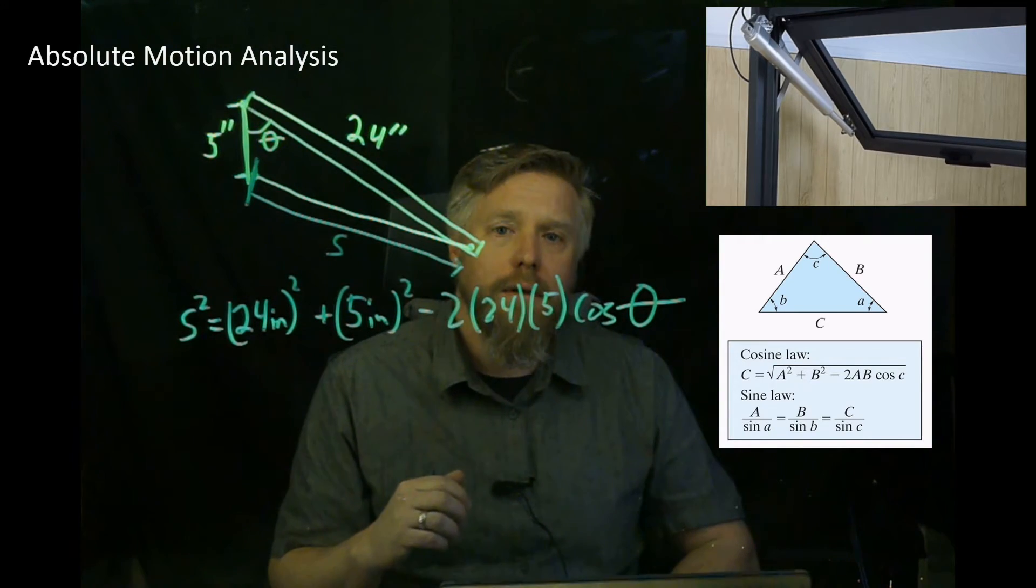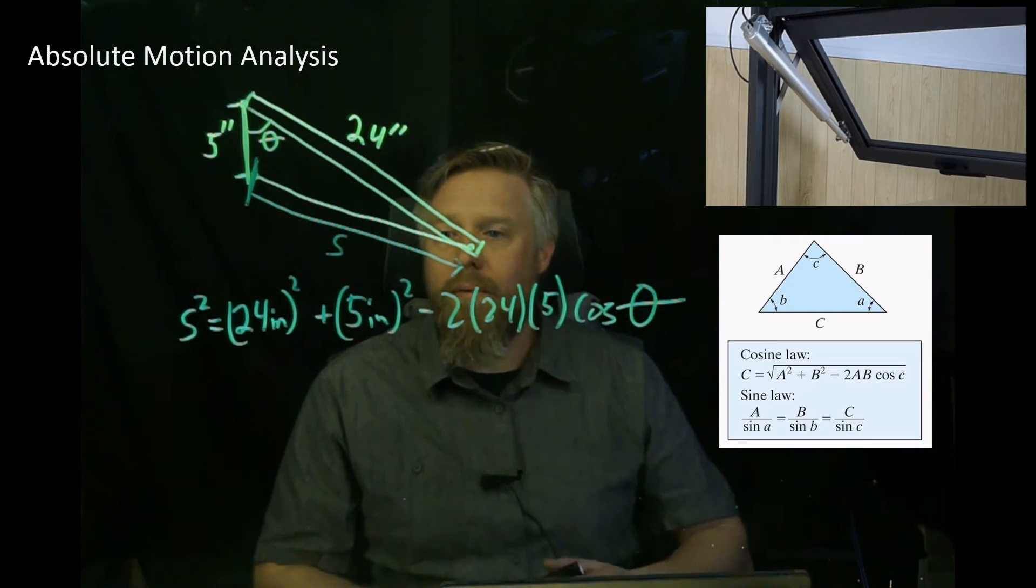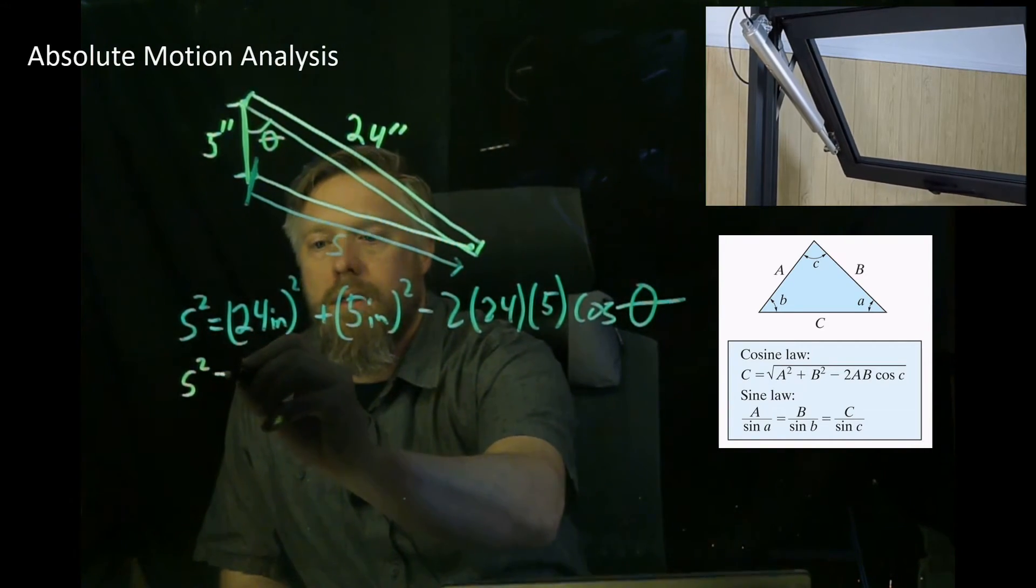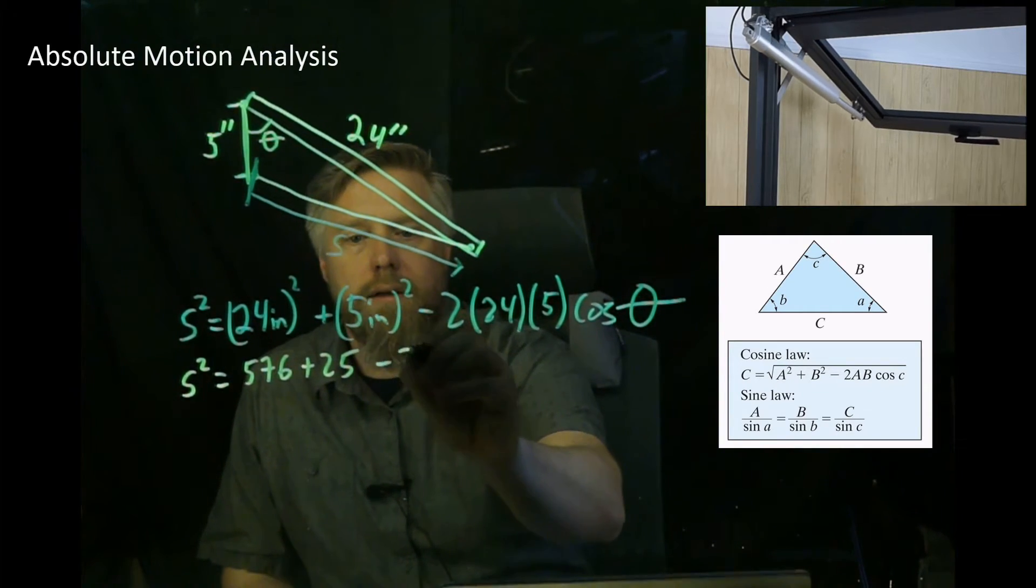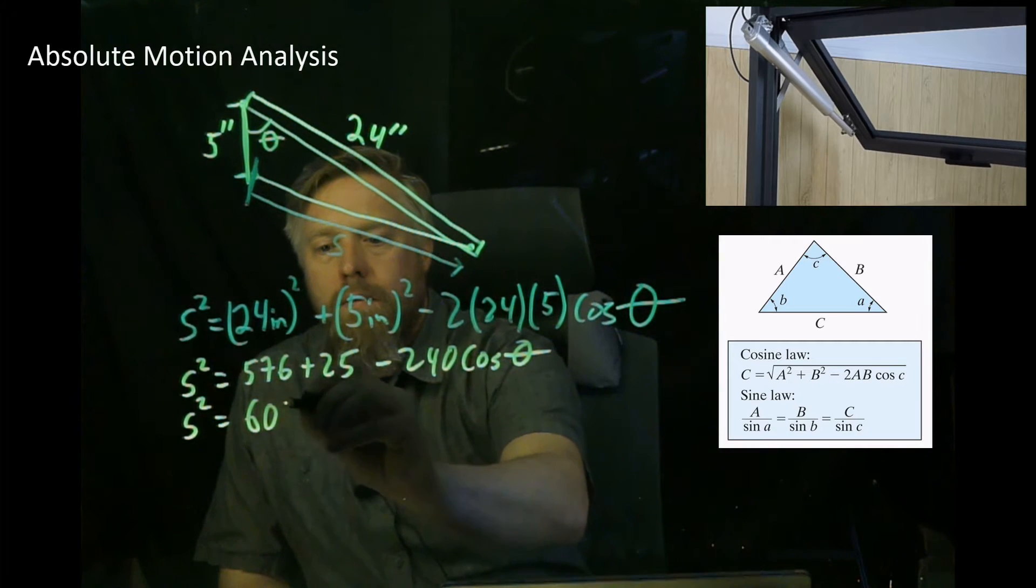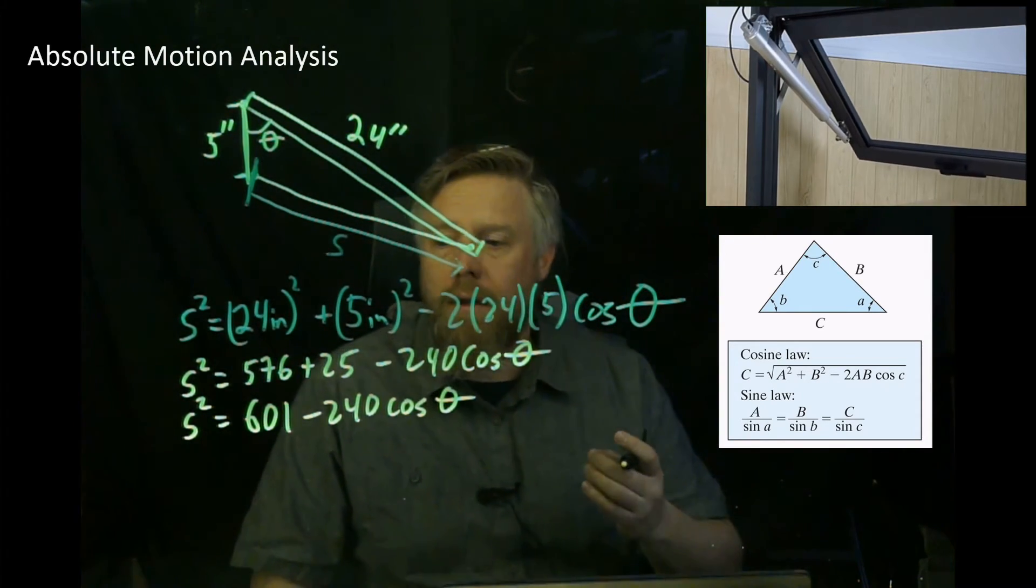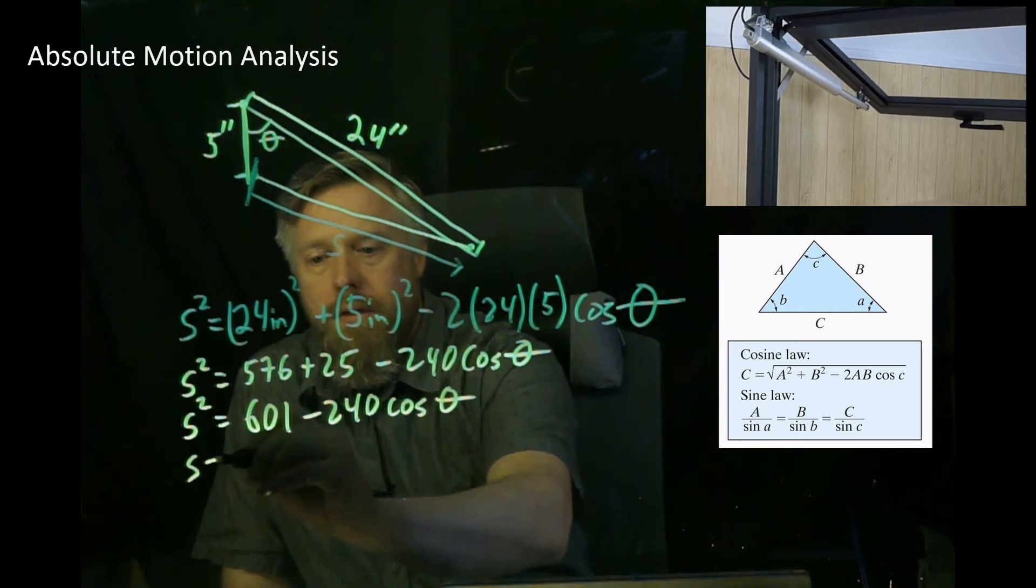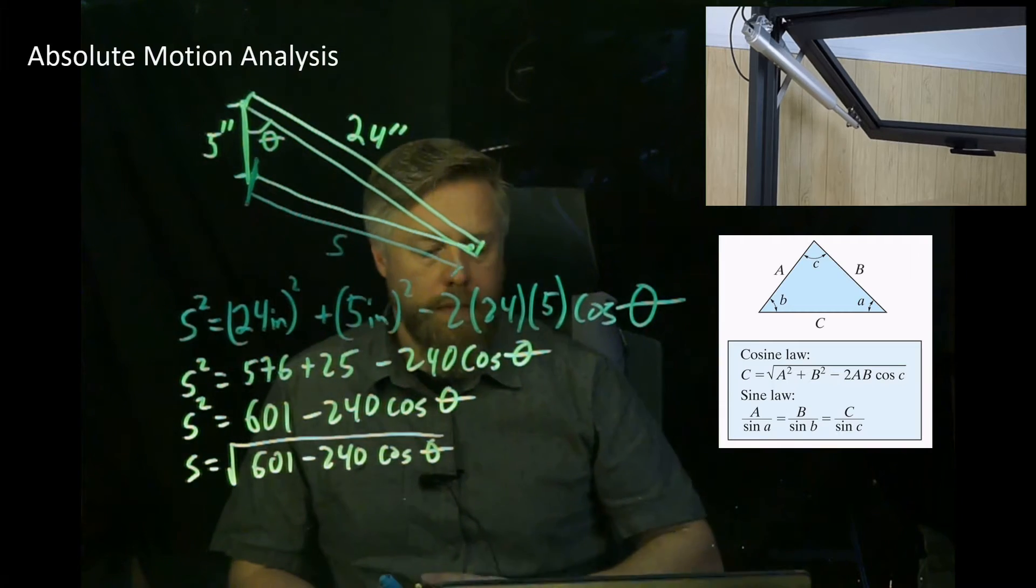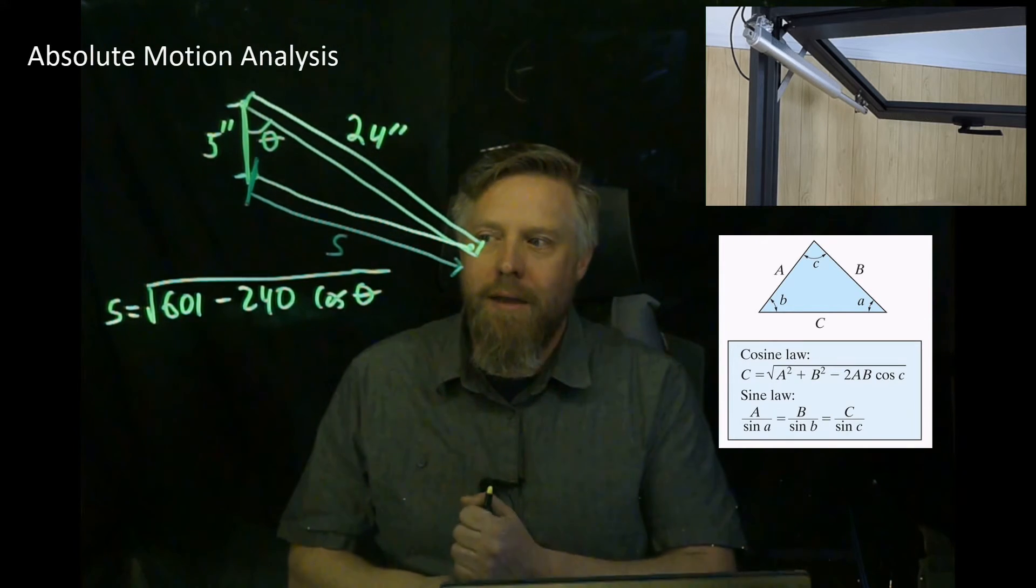But now you're the designer and you want to know, what velocity do I need in my linear actuator to make a known omega? We now need a v and an omega. How are we going to do that? We take the derivative and use our base kinematic equation. Before we do that, we want to clean this up a little bit. So we'll do a little math: s squared equals 576 plus 25 minus 240 cosine theta. That's 601 minus 240 cosine theta. Now we want s by itself so we can take its derivative, so I'm going to take the square root. s equals the square root of 601 minus 240 cosine theta.